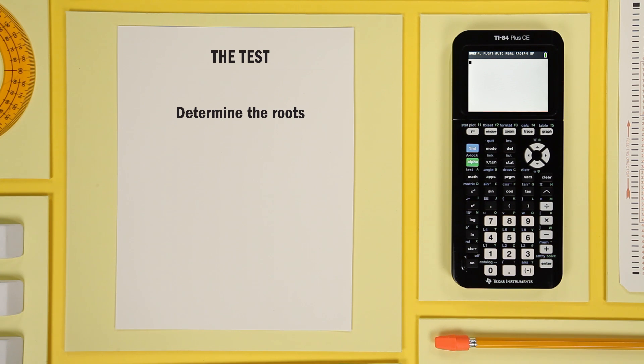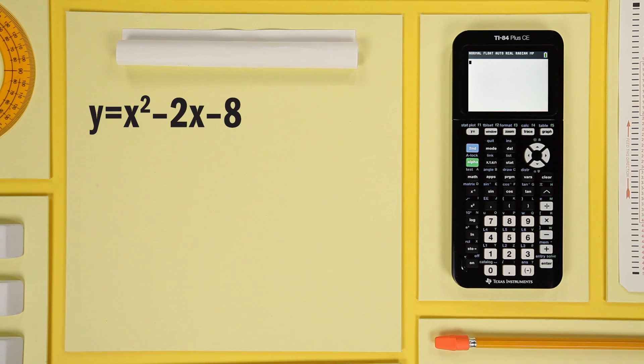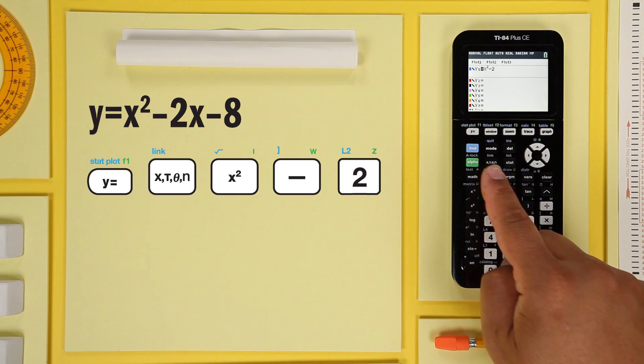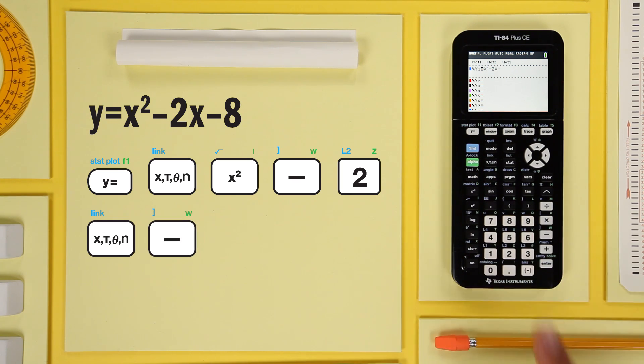Let's look at the first example, y equals x-squared minus 2x minus 8. Enter the expression, y equals x-squared minus 2x minus 8. Enter and graph.